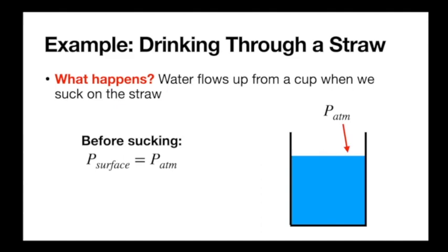Before we start sucking on the straw, we just have a cup of water. The air around it is a fluid system that has pressure everywhere of P-atm — atmospheric pressure. Since that air is in contact with our water at a stationary contact point — the top surface of the water — we know they're at the same pressure there. So the pressure at the surface of the water is P-atm. If we dive deeper, the pressure goes up because potential energy density goes down.